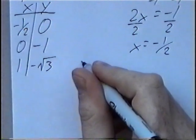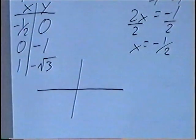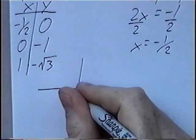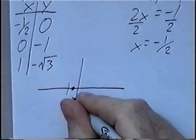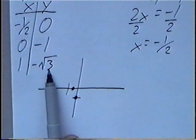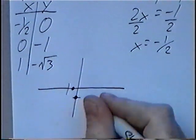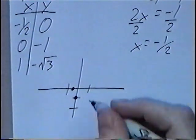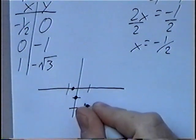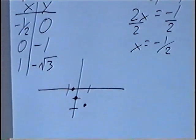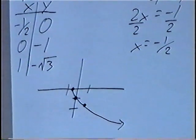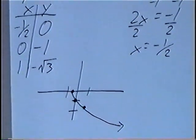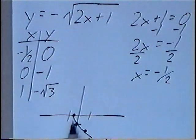Using these values we draw the xy-axis to graph the function. The first point is at negative one-half, zero; the second at zero, negative one; and the third at one, negative square root of three — which is between negative one and negative two. The points line up to make a curve, but this time the curve goes down instead of up, because the negative outside the square root function makes the graph go down.